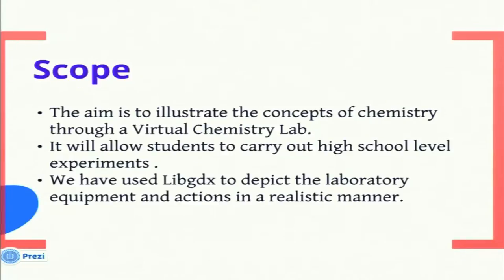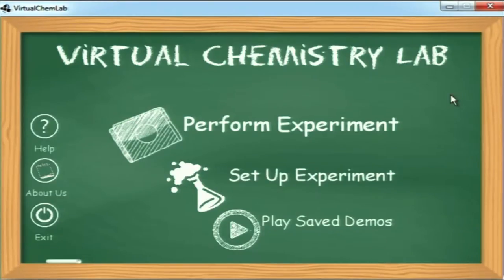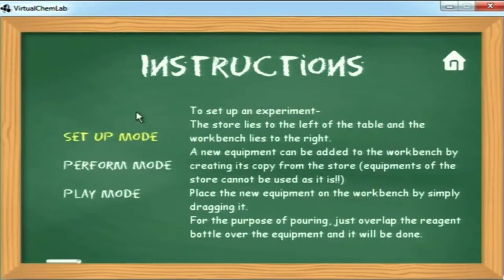Moving to the scope of our project — no government school has a chemistry lab. It is also not financially possible to have a chemistry lab in every school. What we thought was that we would provide them with a virtual chemistry lab that they can work on as close to the real lab as possible. The lab has three modes: the perform mode, the setup mode, and the play saved demos mode. For the easy understanding of the student, we have a help mode in which the student can clearly understand what has to be done in each mode.